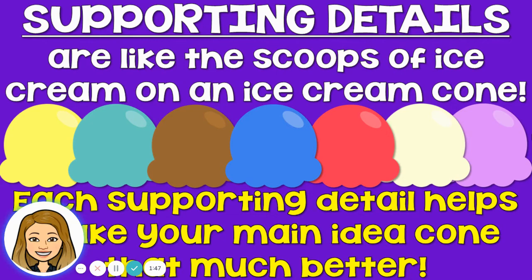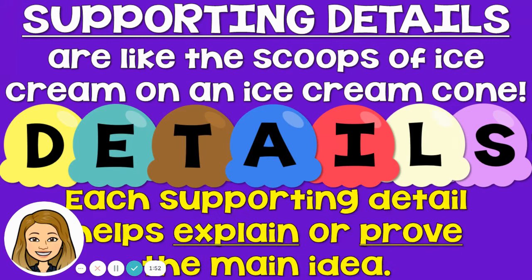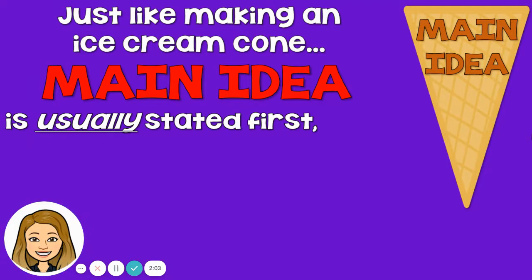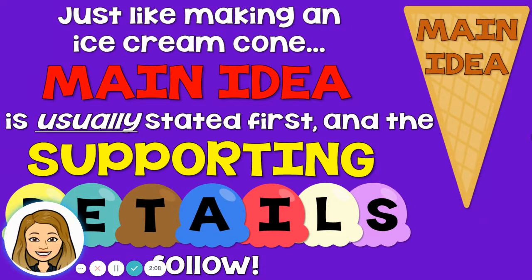Each supporting detail helps your main idea that much better, just like you love eating the ice cream cone, but it wouldn't be as great without the ice cream on top. Each supporting detail helps explain or prove the main idea. So just like making an ice cream cone, the main idea is usually stated first — it's the first thing that you're going to read, and then the supporting details come next.